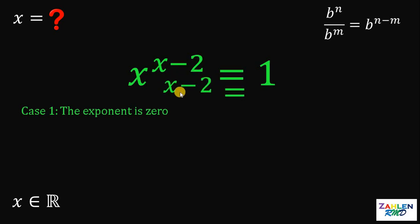Therefore, we can say that x minus 2, this exponent must be equal to 0. If we add 2 on both sides, we get that the value of x must be equal to 2.